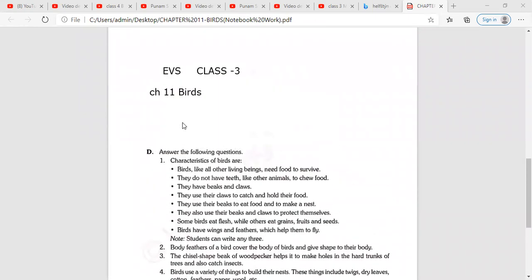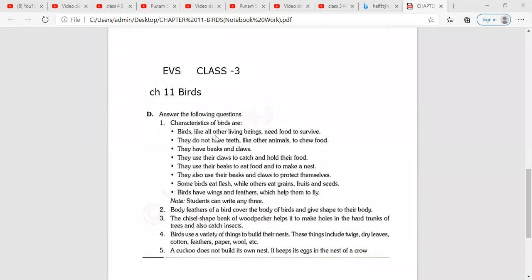Characteristics of birds are: birds like all other living beings need food to survive. They do not have teeth like other animals to chew food. They have beaks and claws. They use their claws to catch and hold their food. They use their beaks to eat food and to make a nest. They also use their beaks and claws to protect themselves. Some birds eat flesh while others eat grains, fruits and seeds. Birds have wings and feathers which help them to fly. Note, students can write any three.